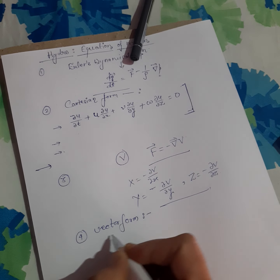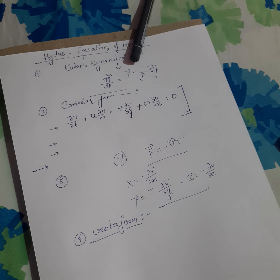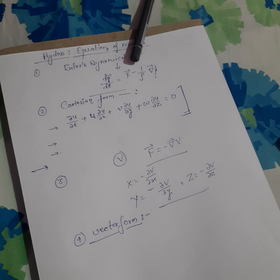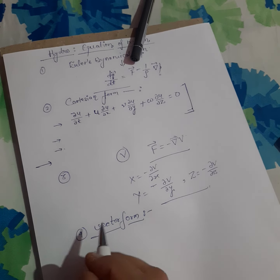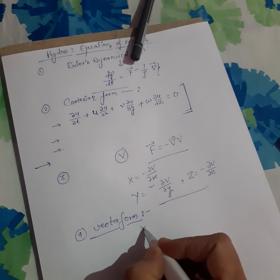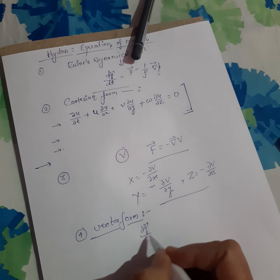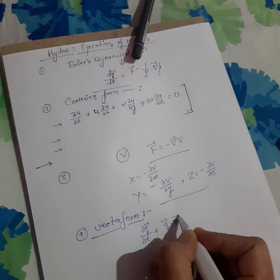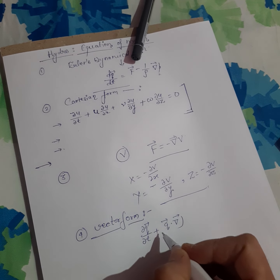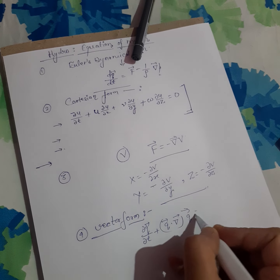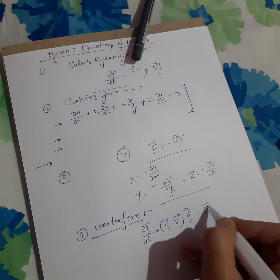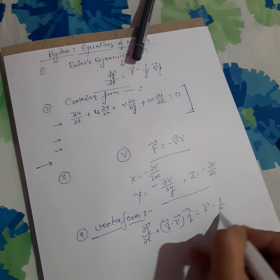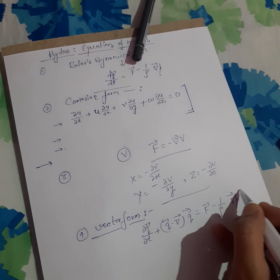Next, the main representation is Euler dynamical equations in vector form: ∂q/∂t + (q·∇)q = f − (1/ρ)∇p.